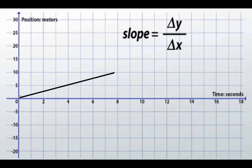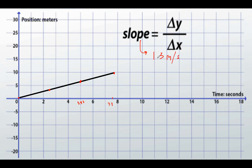Starting at the origin, our first point is (0, 0). Our second point is at about 3 meters at 2.3 seconds. We reach 7 meters at about 5.4 seconds. And last but not least, we reach the band room 10 meters away at 7.7 seconds. We plot our points and draw a best fit line. The slope of this line should be the average speed, which we calculated — thanks to Cindy — to be 1.3 meters per second.